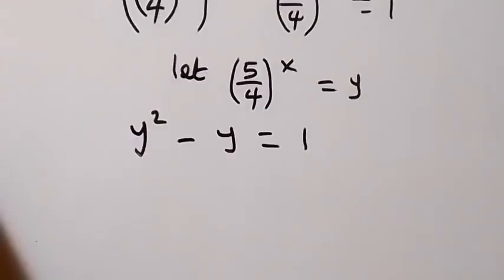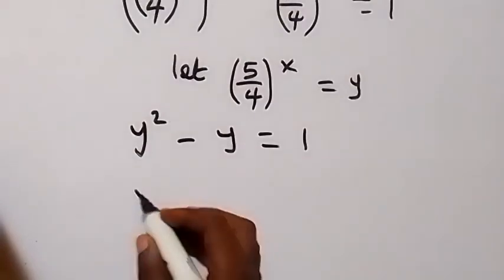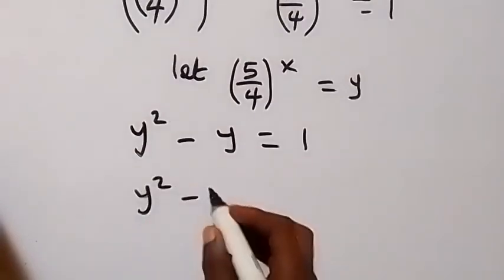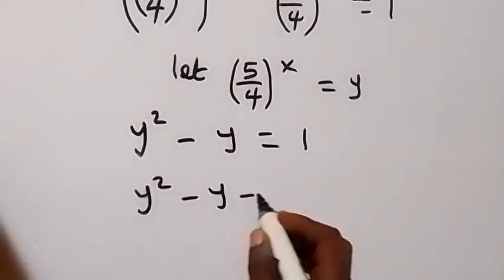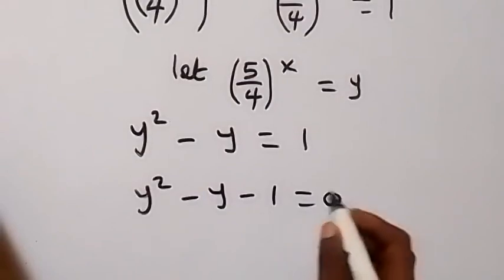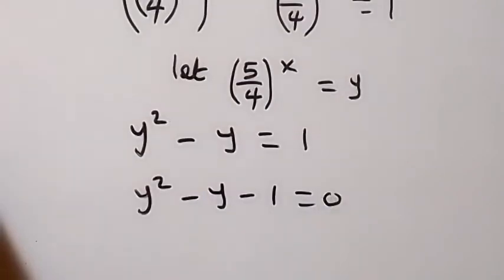We take 1 to the other side, and this becomes y squared minus y minus 1 equals 0. Now we solve this quadratic equation.